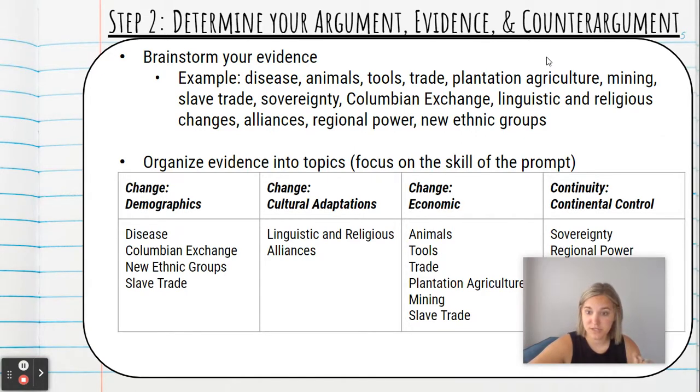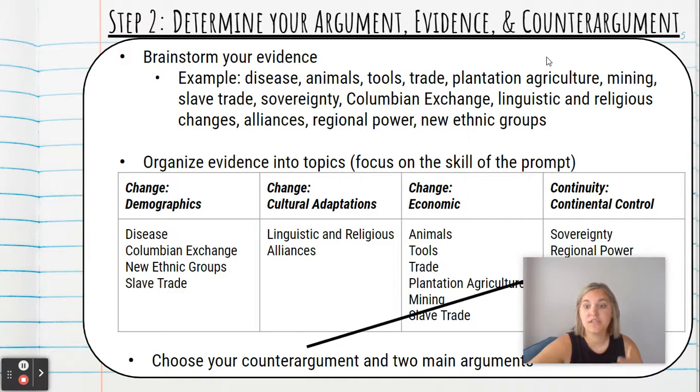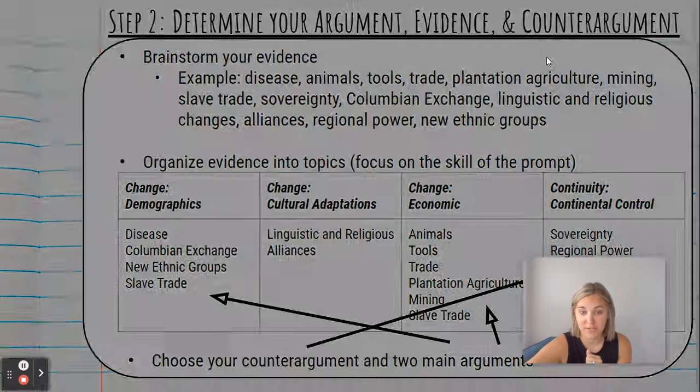Then the third step for students is to determine the counter argument in two main arguments. And based on the evidence that I came up with I have chosen continental control as a continuity and economic changes and demographic changes as my main two arguments.